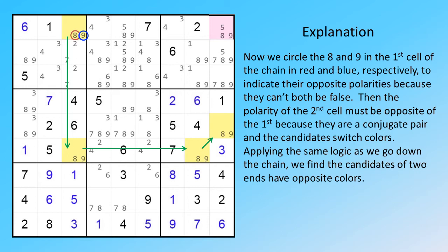Then the polarity of the second cell must be opposite of the first, because they are a conjugate pair in the candidates' switch colors. Applying the same logic as we go down the chain, we find the candidates of two ends have opposite colors.